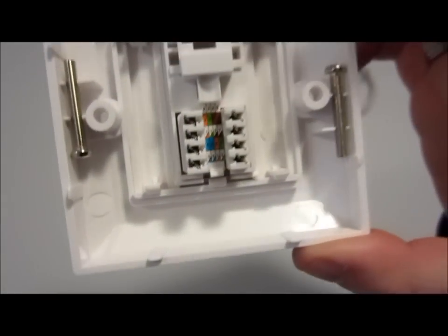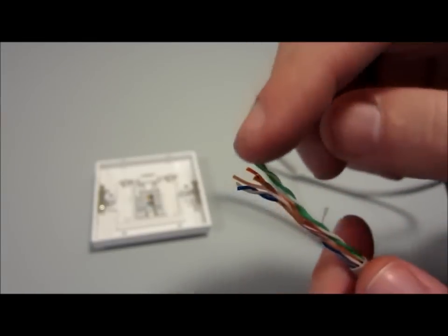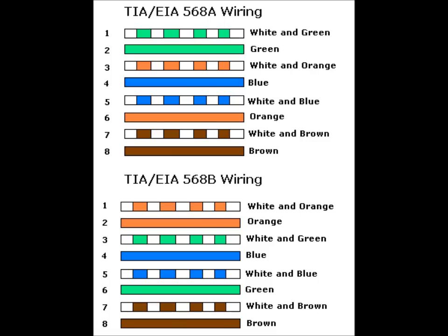Step 2. You must now untwist and separate the cores. After you have done this, look at the colour coding. There is a colour coding for 568A and 568B wiring.